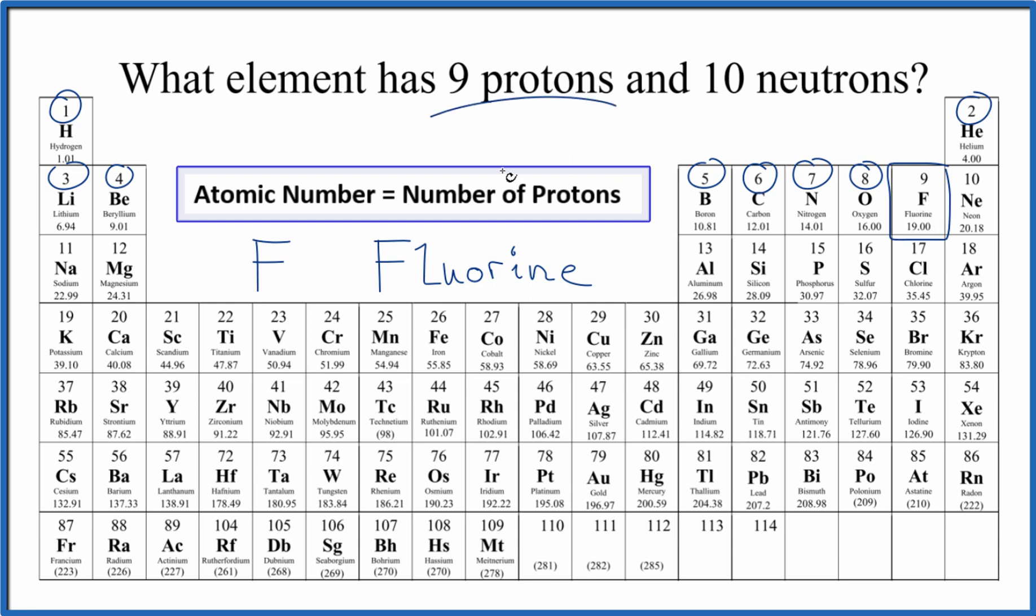Nine protons, it will always be fluorine because that's its atomic number nine there. But the number of neutrons might differ.